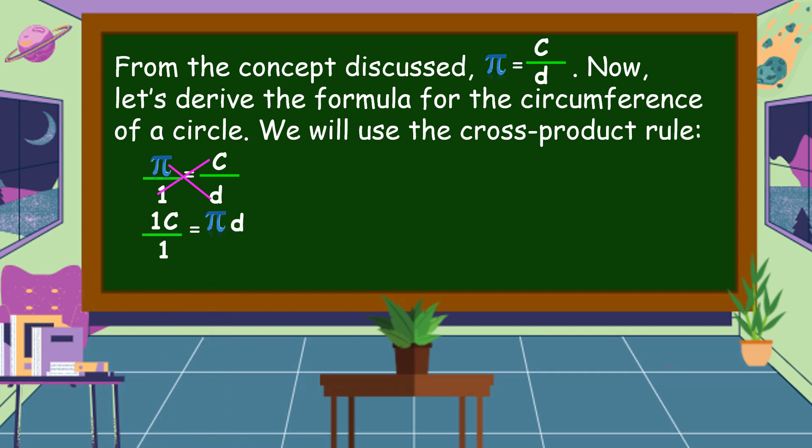To get c, we're going to divide both sides of the equation by 1. When c divided by 1 is equal to c, pi d divided by 1 is equal to pi d.